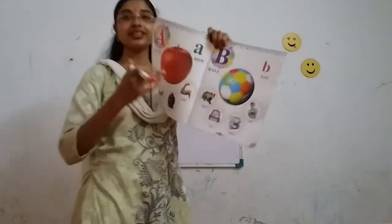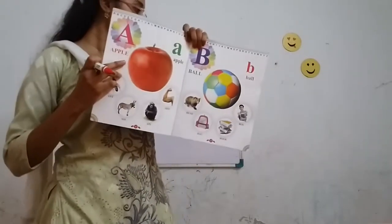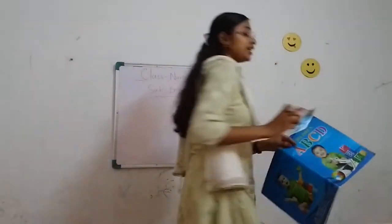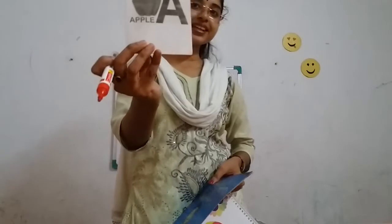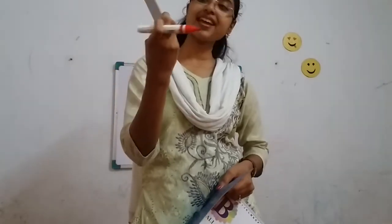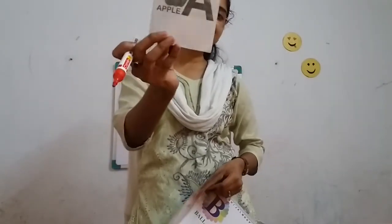This is — what is this? All of you? Okay. What is this? This is A. A for? It is an apple. What is this? Do you know? A for apple.